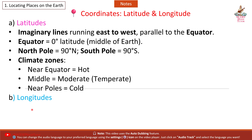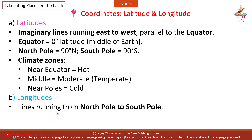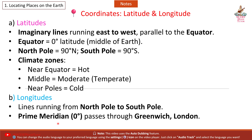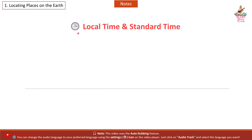B. Longitudes: lines running from the North Pole to the South Pole. Prime Meridian: 0 degrees, passes through Greenwich, London. Longitudes are used to measure time.